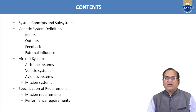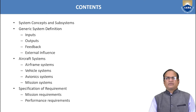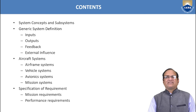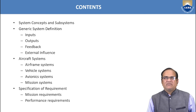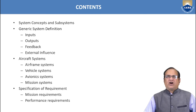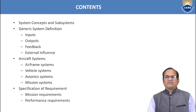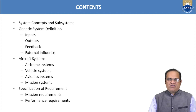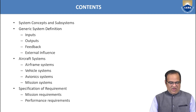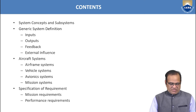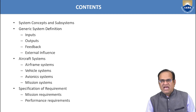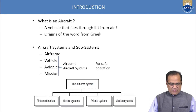Today's lecture content includes: first, system concept and subsystem — generic system definitions, input, output, feedback, and external inference. Then we have aircraft systems covering vehicle systems, airframe systems, avionic systems, and mission systems. Finally, we have specification of requirements — mission requirements and performance requirements.